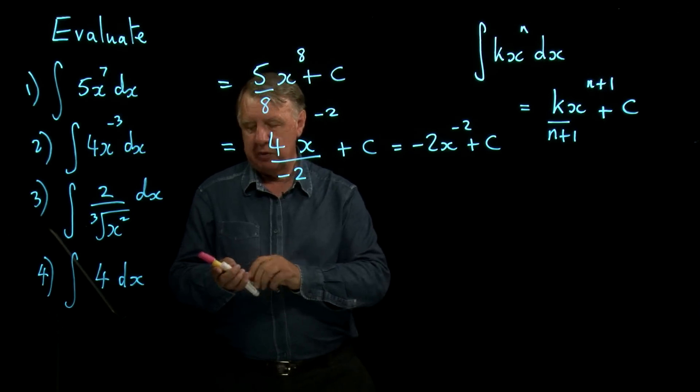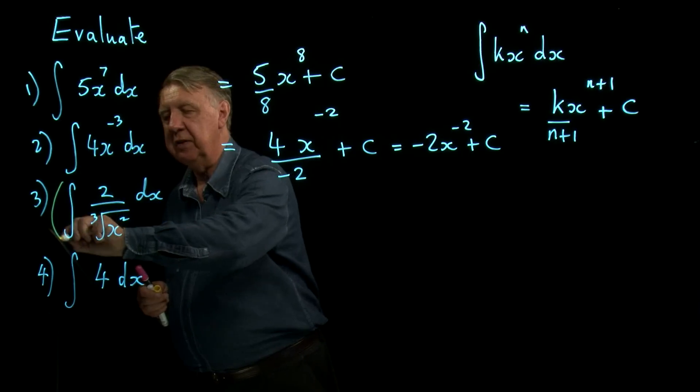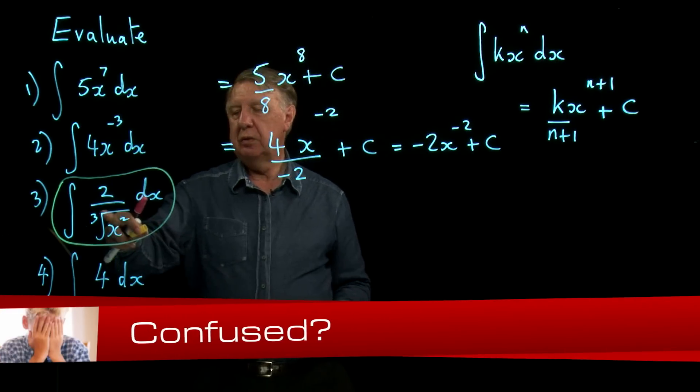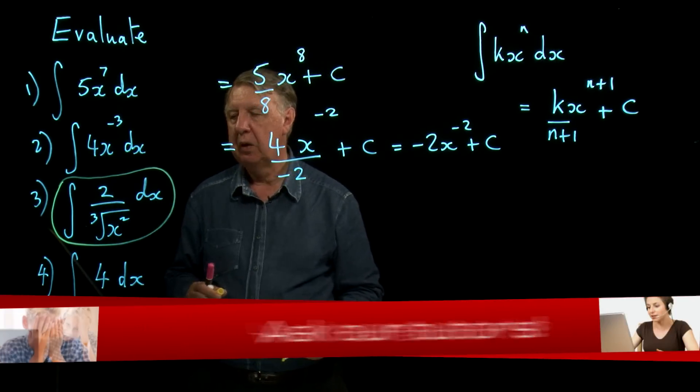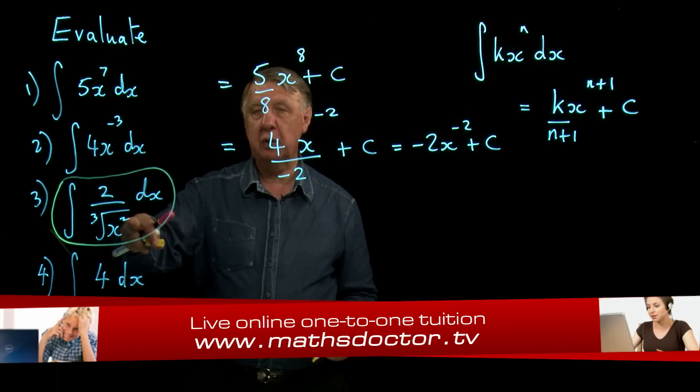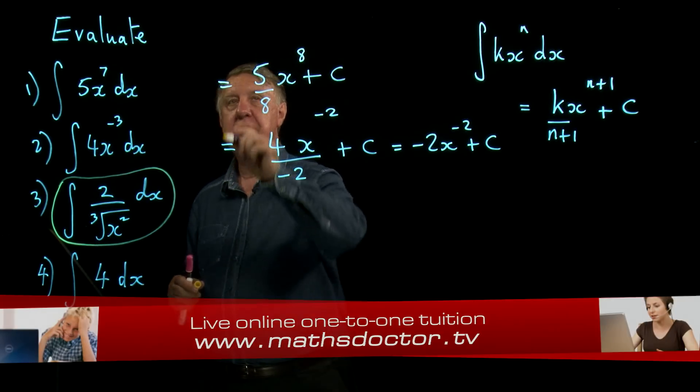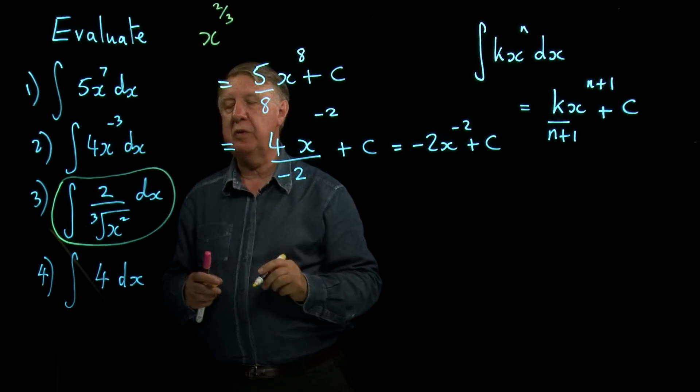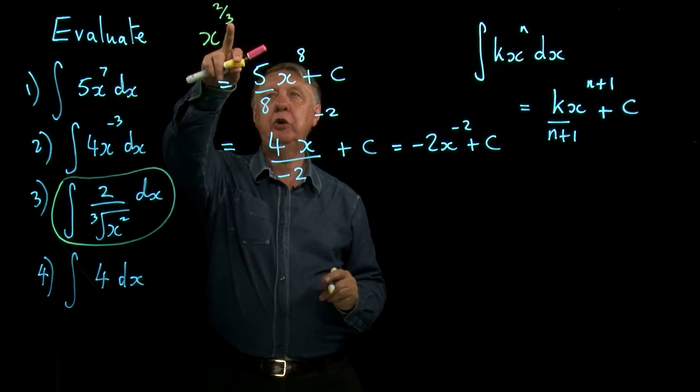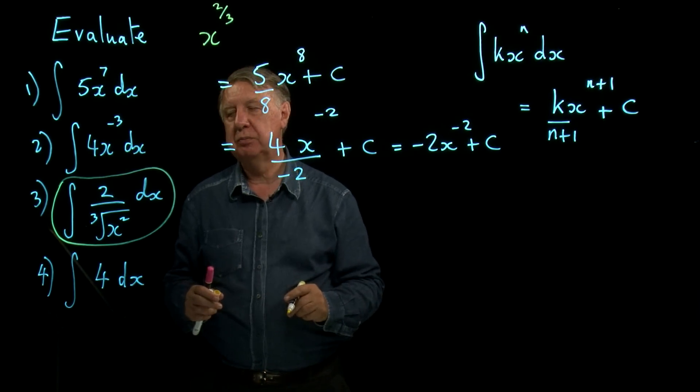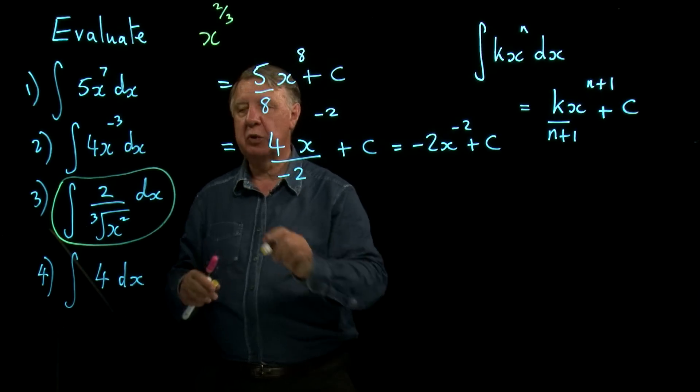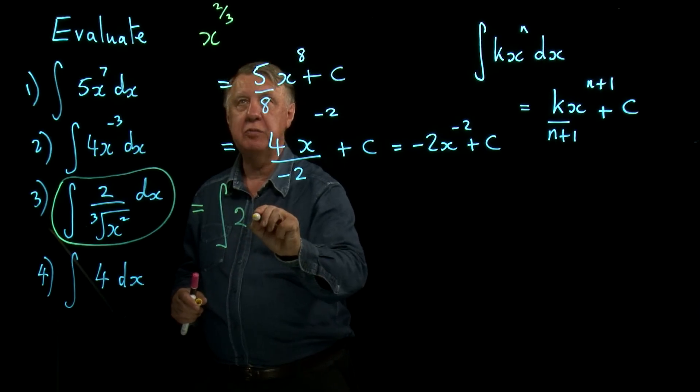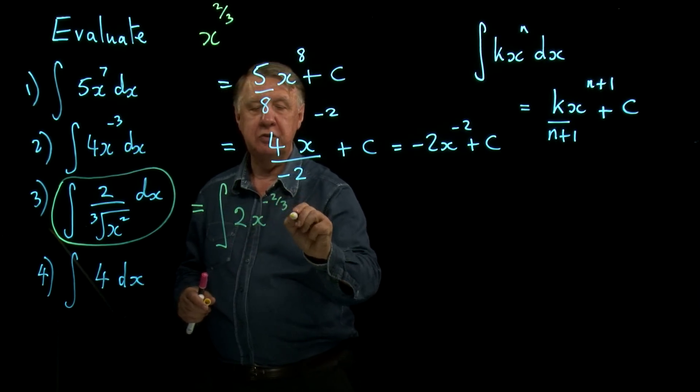Now let's look at number 3 which, let's change colours here shall we? Let's make this our yellow equation. Now what on earth are we going to do with this? Well the cube root of x squared is x to the 2 thirds. The cube root of x squared. But of course it's on the bottom line. So what I'm actually attempting to integrate here is 2 times x to the minus 2 thirds.